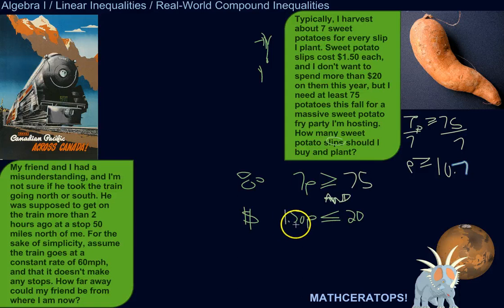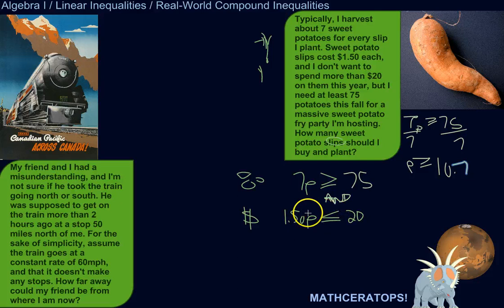For the cost constraint: 1.50P is less than or equal to 20. It's $1.50 times however many slips I buy, and that needs to be less than or equal to $20.